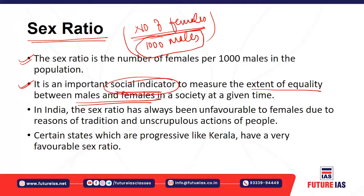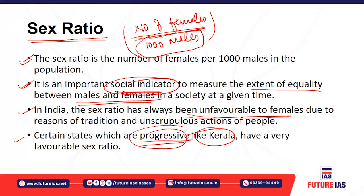In traditional societies with paternalistic and orthodox outlooks, unfavorable conditions exist for females, which is why the sex ratio has been unfavorable in certain pockets like Haryana and Jammu & Kashmir. Progressive states like Kerala have very favorable sex ratios — in Kerala the number of females is even greater than the number of males.